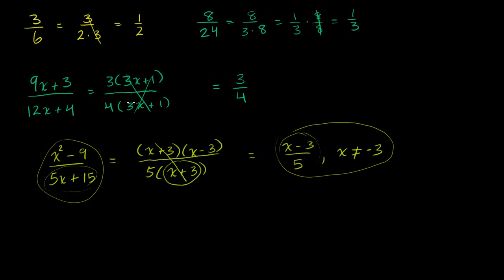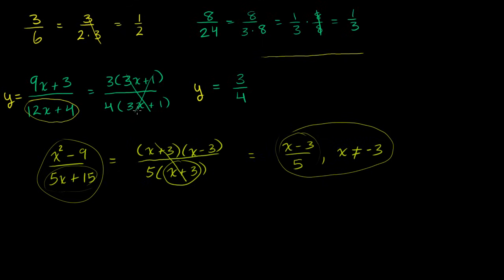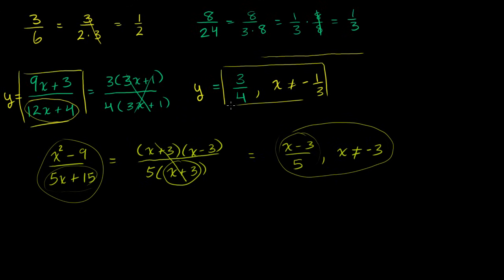Similarly, over here, if this was a function — say y = (9x + 3)/(12x + 4) — and we wanted to graph it, when we simplify it the temptation is to say this is the same graph as y = 3/4, which is just a horizontal line at y = 3/4. But we also have to exclude the x values that would have made the original denominator equal to 0. That would be x = −1/3. So we have to say x cannot be equal to −1/3. That condition is what truly makes the simplified form equal to the original.